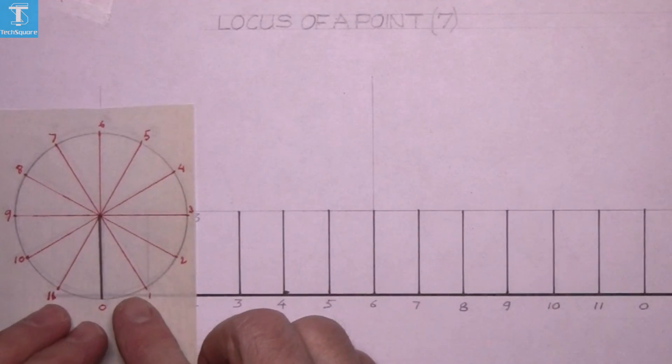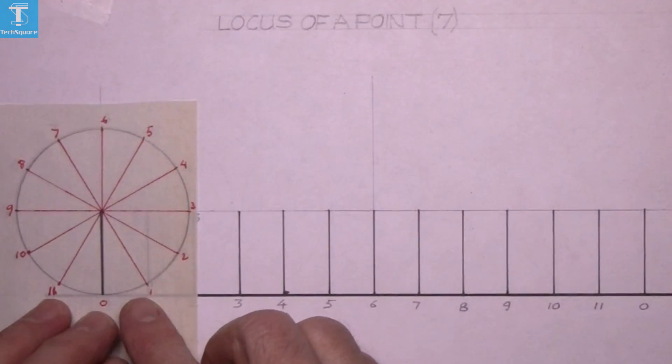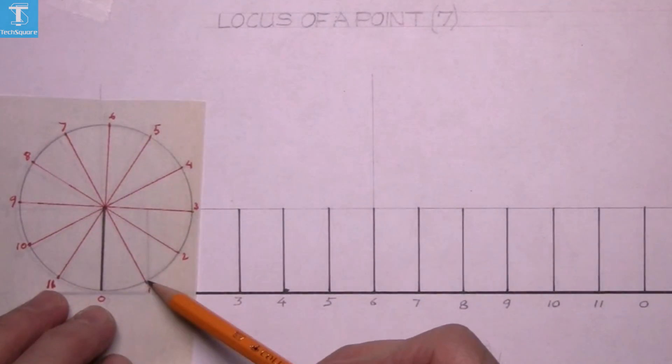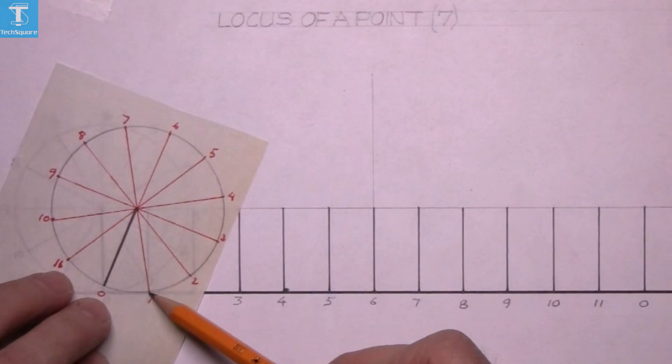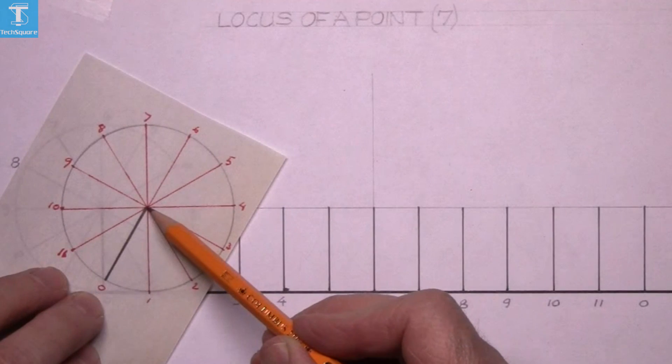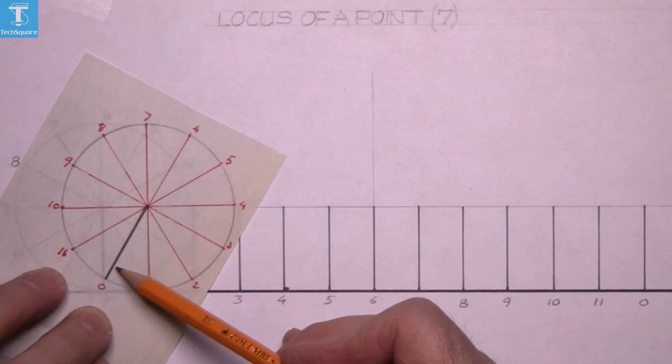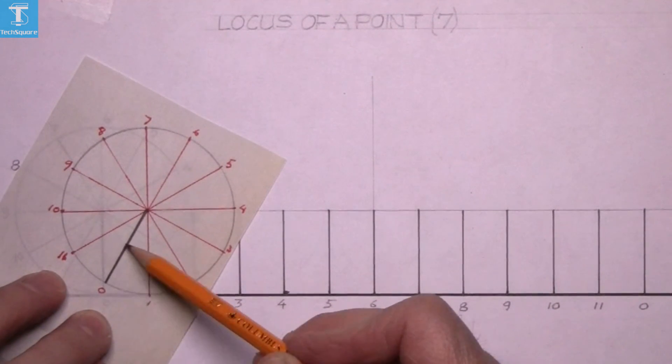This is it drawn on a piece of tracing paper so that you can see through it. If I rotate point one down to the line, the center point moves to position one on the line, and this line here is at sixty degrees.